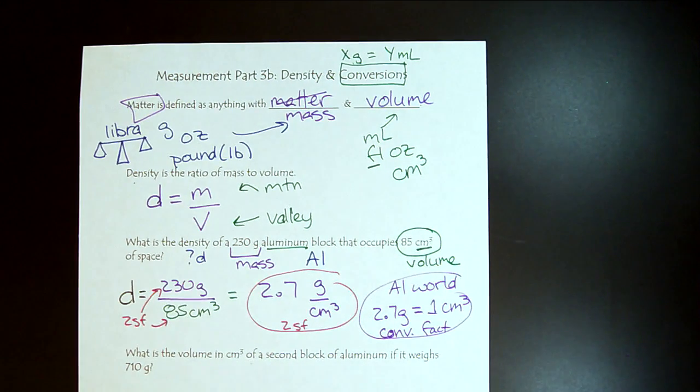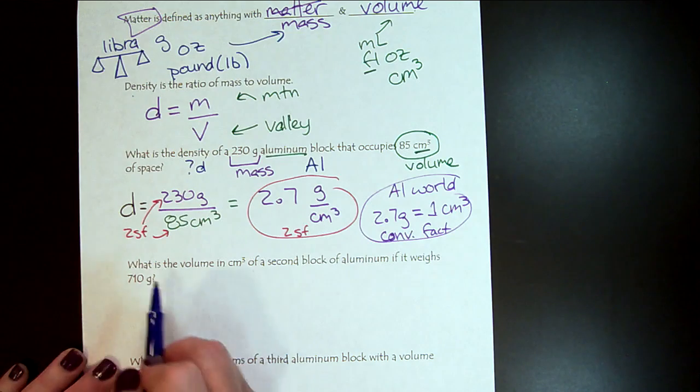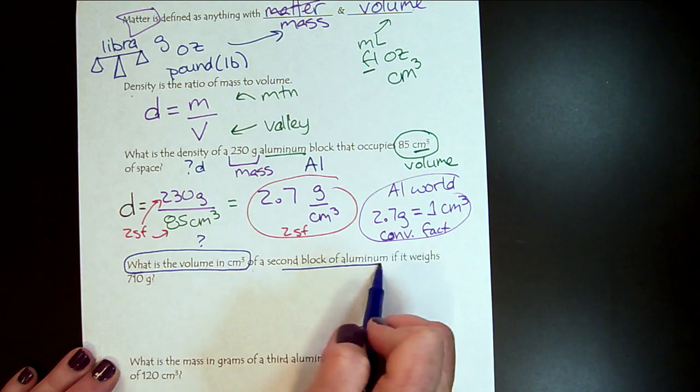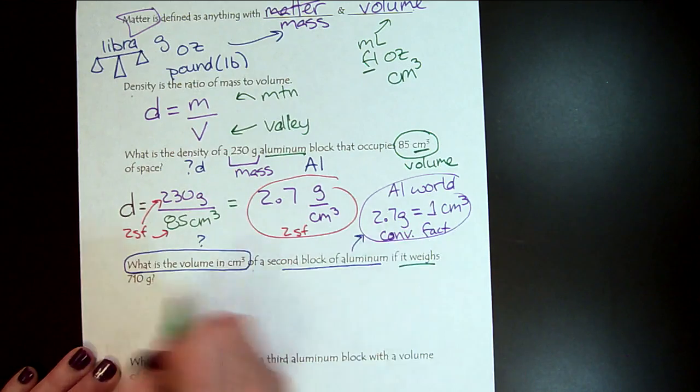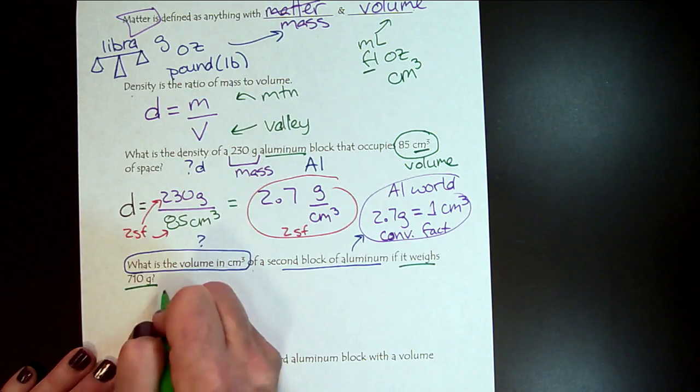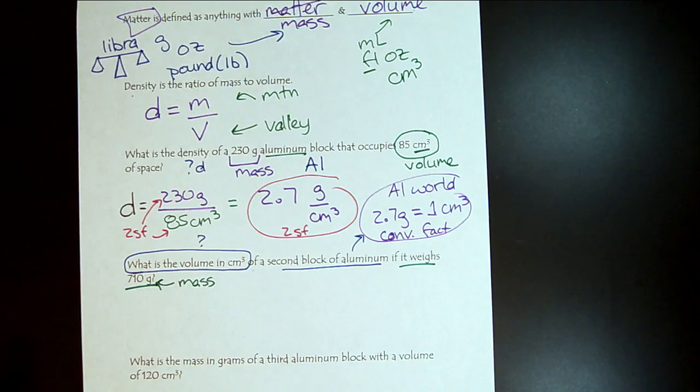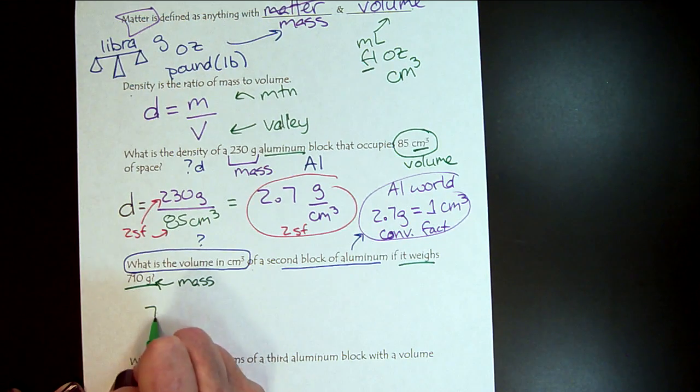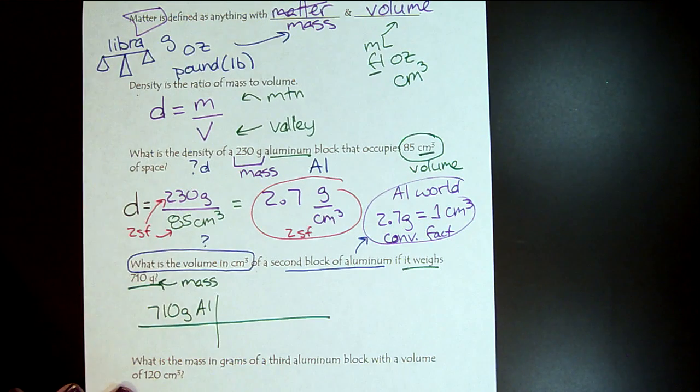So let's see how we can use that in a question. So here, what do we want to know? What is the volume in centimeters cubed. And it's aluminum, so we're going to be able to use our aluminum information. If it weighs 710 grams, so this is our mass. So we see mass and volume, we know we're going to need density. So where do we start? Well, for this block, the only thing we know about this block is it weighs 710 grams, so let's start with what we know. So that's 710 grams of aluminum.